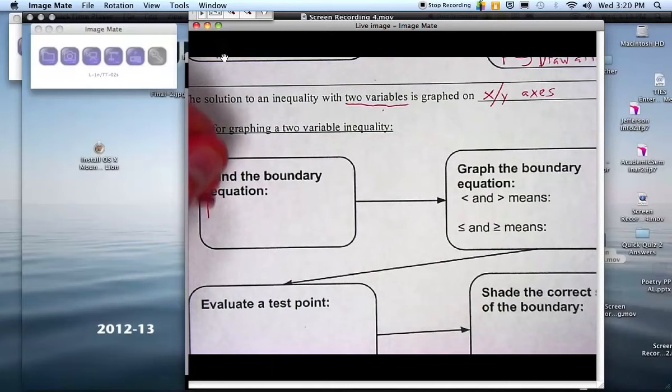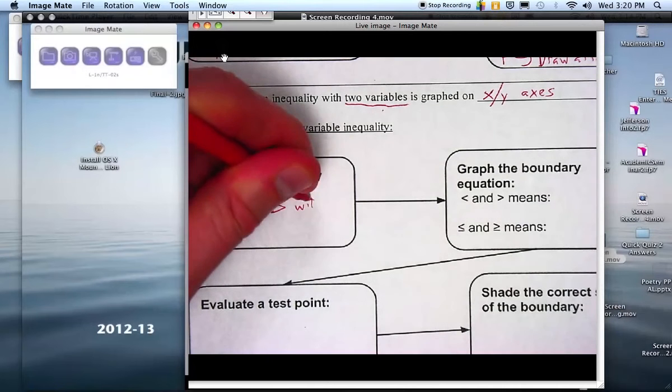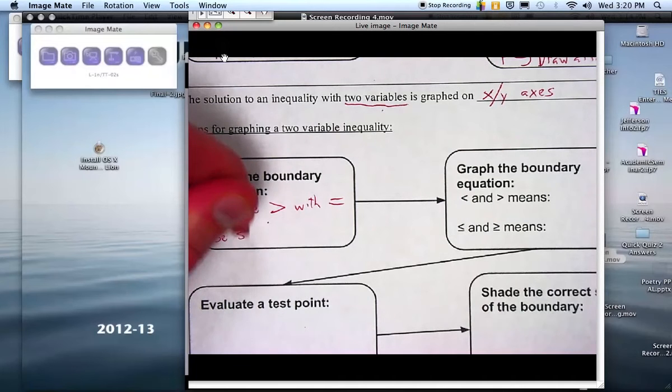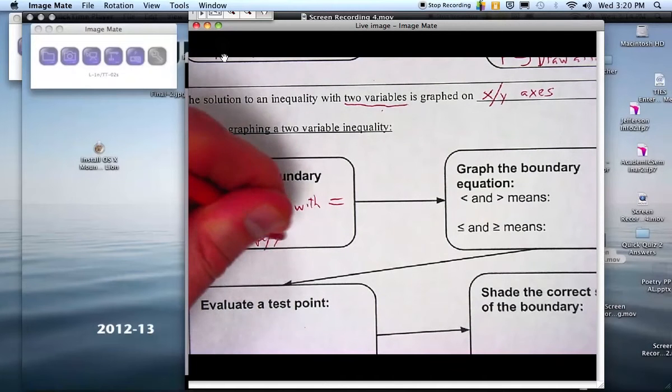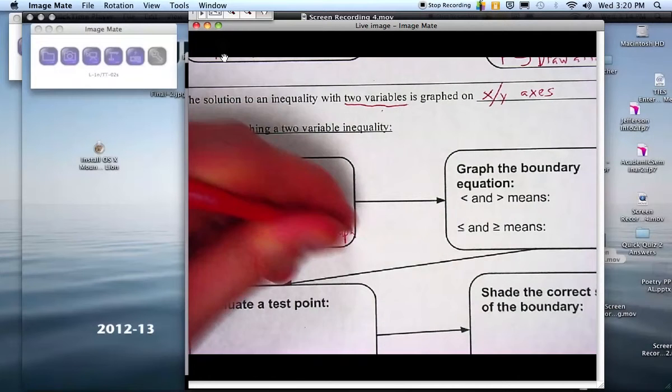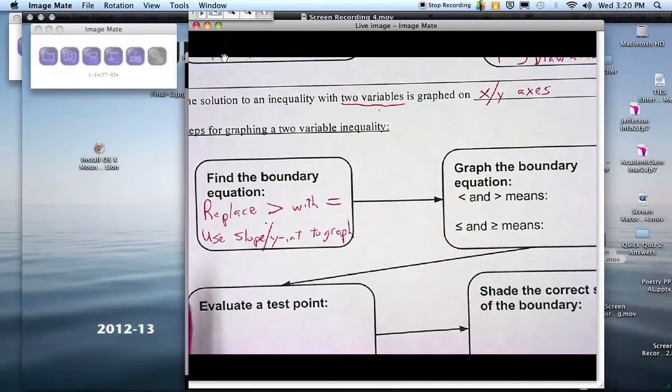We're still going to start by replacing the greater than with an equals. And so that's the boundary equation. It's now a line, and you're going to use the slope and y-intercept to graph. So we reviewed that today. You're going to use the slope and the y-intercept to graph.